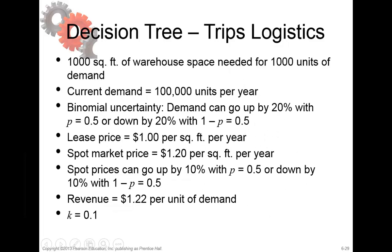In this example we have a distributor, Trips Logistics. Trips Logistics has a current demand of 100,000 units per year. 100,000 units a year represents 100,000 square feet of warehouse. The demand is uncertain and can go up by 20% with the probability of 0.5 or 50%, and can go down by 20% with the probability of also 50%.